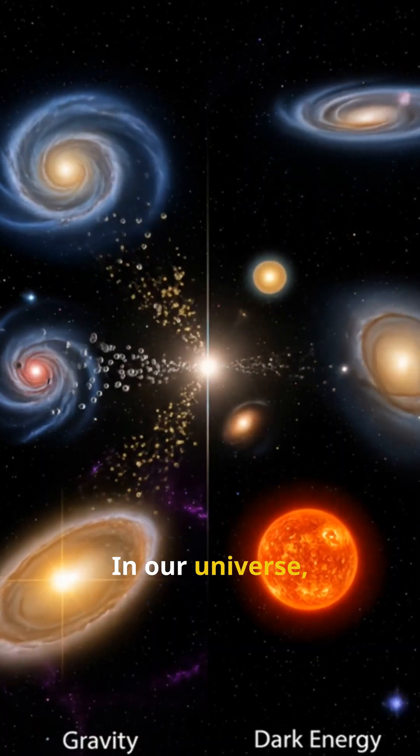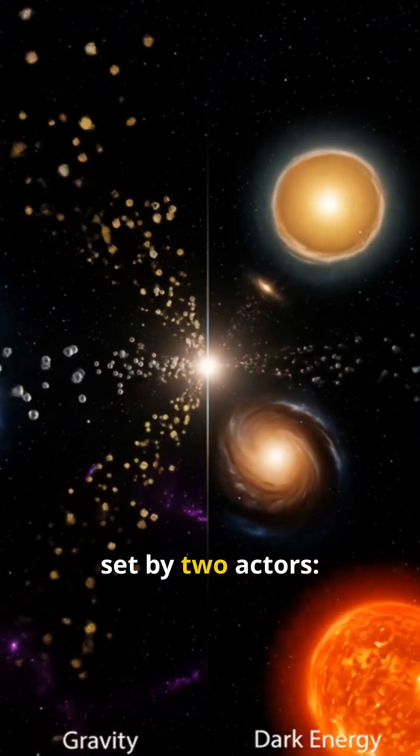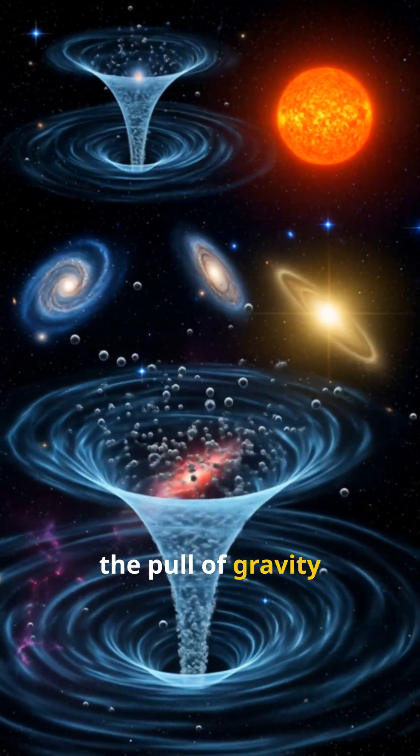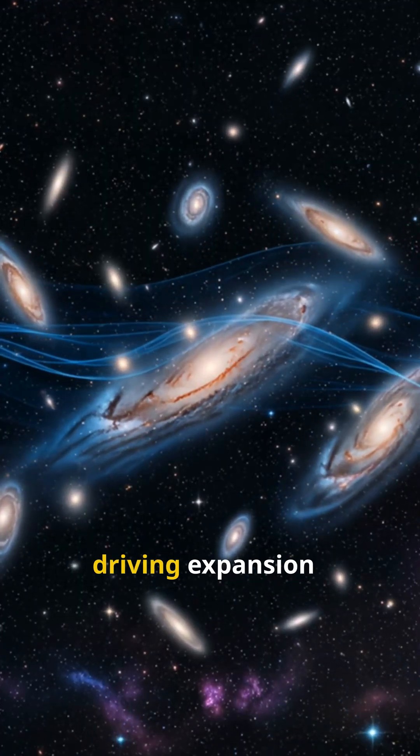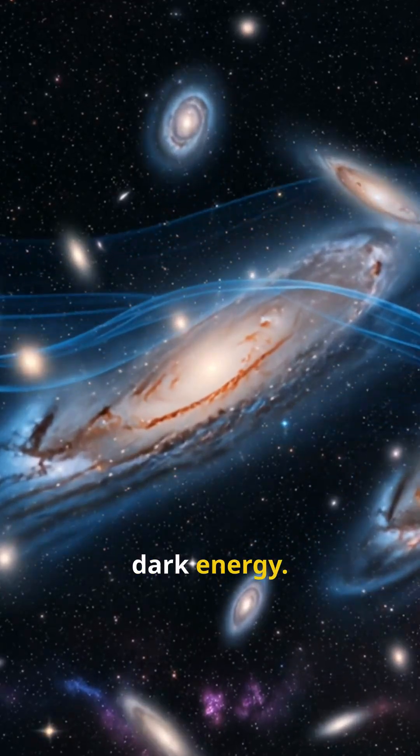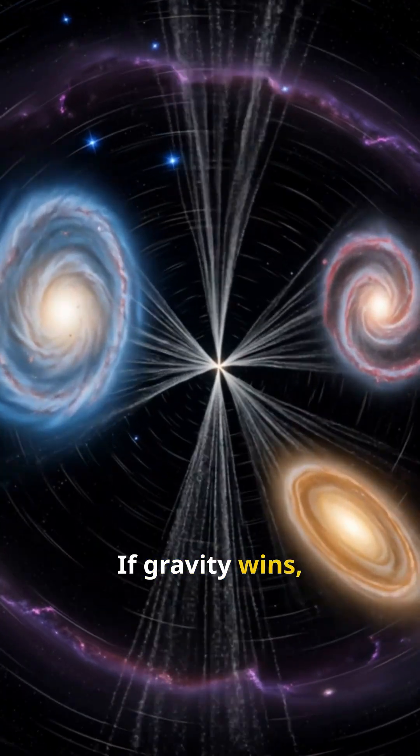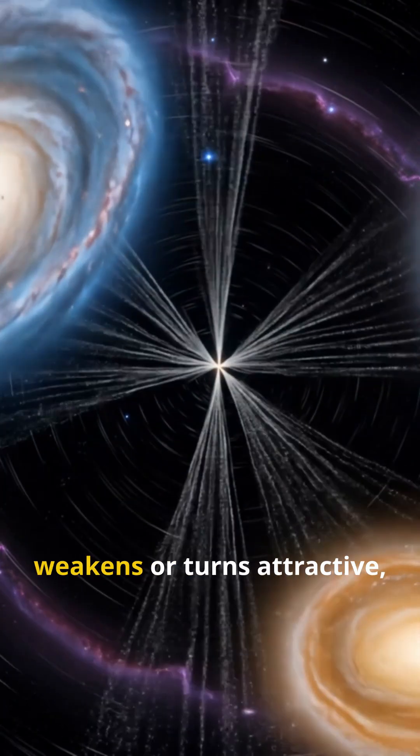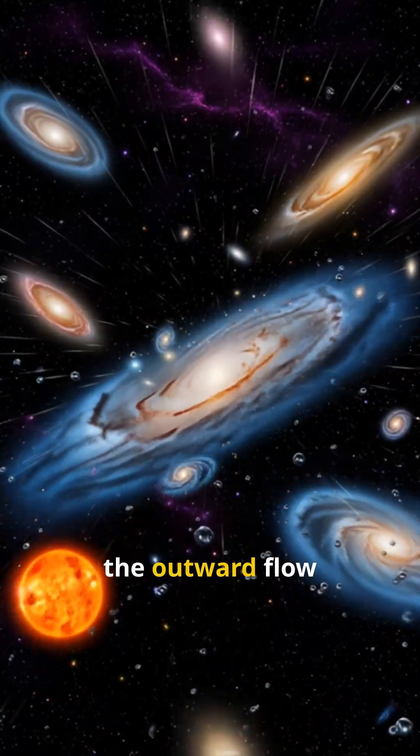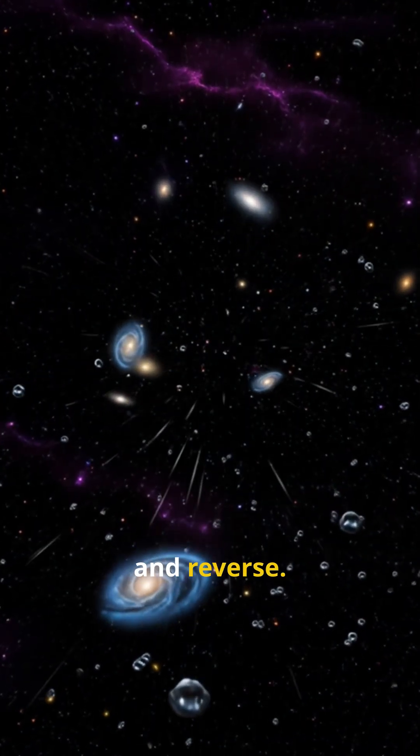In our universe, motion on the largest scales is set by two actors: the pull of gravity from matter, and whatever is driving expansion - dark energy. If gravity wins, or if dark energy weakens or turns attractive, the outward flow would slow, stop, and reverse.